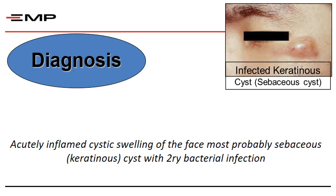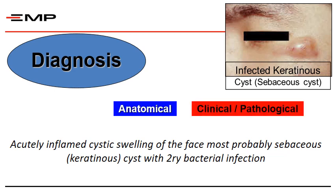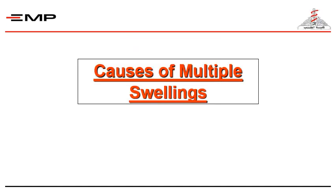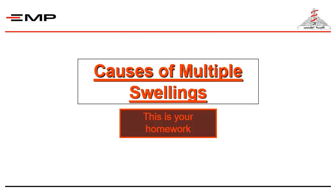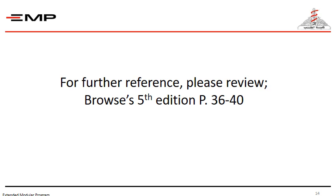Finally, you should formulate a phrase that includes the different components of the diagnosis: the anatomical, the clinical and pathological, and the etiological diagnosis. For this infected keratinocyst, a formulated diagnosis could be: an acutely inflamed cystic swelling of the face, most probably sebaceous or keratinocyst with secondary bacterial infection. Your homework is to find the causes of multiple swellings — be ready with this in the face-to-face session. For further references, please review Browse's 5th Edition, pages 36 to 40. Thank you.